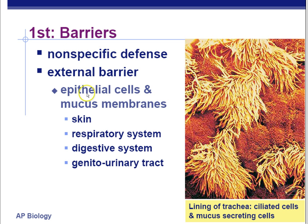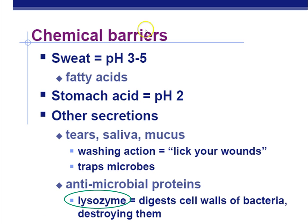The first line of defense is a nonspecific defense — a general defense against anything that wants to get inside your body. It's an external barrier. It includes the epithelium, the covering, and the mucous membranes. Your skin, respiratory system, digestive system, and genitourinary tract are all exposed to the external environment and have protection against it. Here we have cilia in the back of your throat. These cilia sweep up particles and bacteria that get into your trachea, then it moves into your mouth, you swallow it, and they get into the stomach acid and are destroyed.